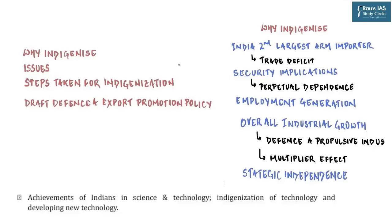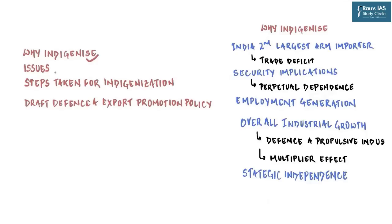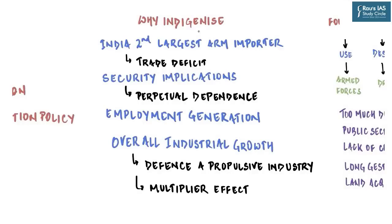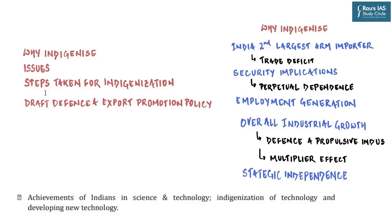This topic maps to the GS Paper 3 syllabus: achievement of Indians in science and technology, indigenization of technology, and developing new technology. We will discuss four key things: why there is a need for indigenization, what are the issues with indigenization, what steps have been taken, and the Draft Defence and Export Promotion Policy. The discussion begins with why indigenization of defense technology is absolutely important for maintaining India's integrity and sovereignty — starting with the fact that India is the world's second largest arms importer.